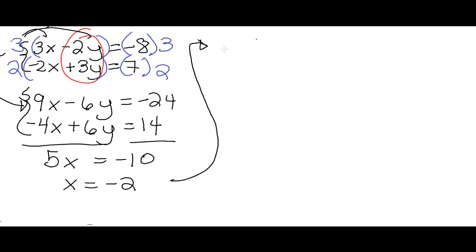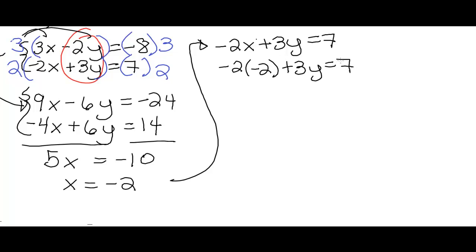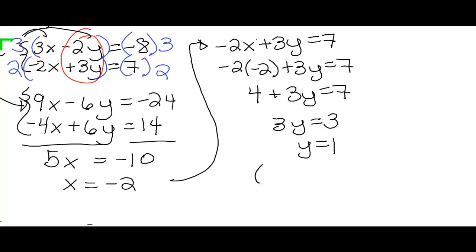We also need to solve for y to find our ordered pair. Plugging negative 2 in for x into either equation — I'll use the original second equation, negative 2x plus 3y equals 7, since the original equations have smaller coefficients. Substituting: negative 2 times negative 2 is positive 4, plus 3y equals 7. Subtract 4 from both sides to get 3y equals 3, then divide by 3 to get y equals 1. So our solution is the ordered pair negative 2 comma 1.